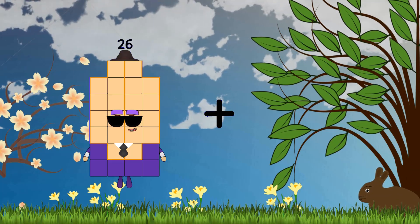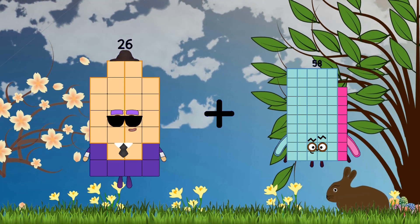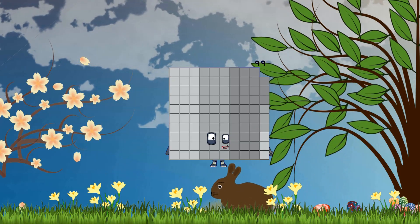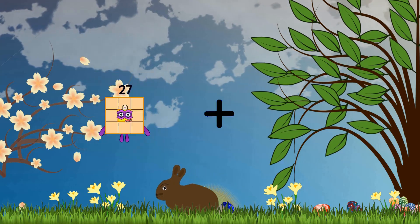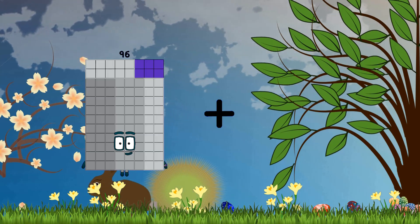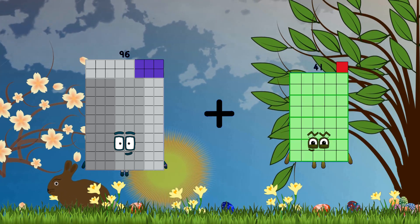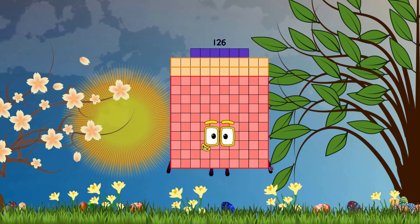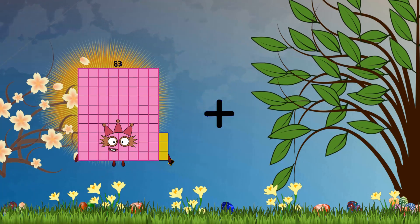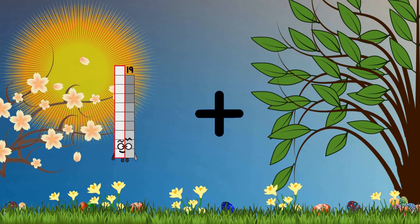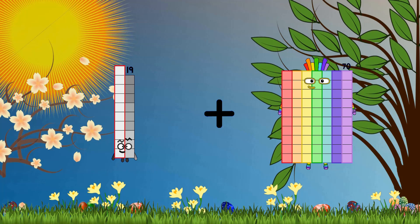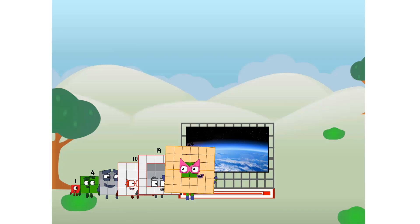26 plus 73 equals 99. 96 plus 30 equals 126. 19 plus 70 equals 89. We sent a square to the edge of space without rockets.